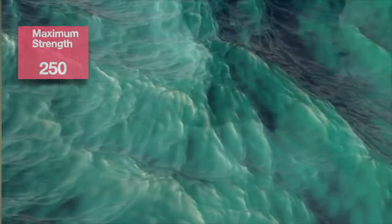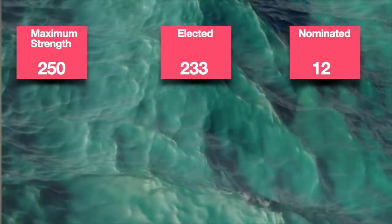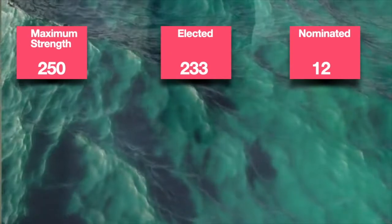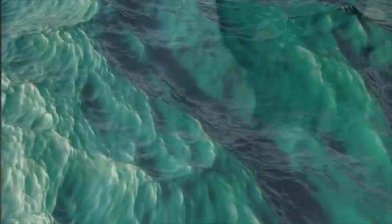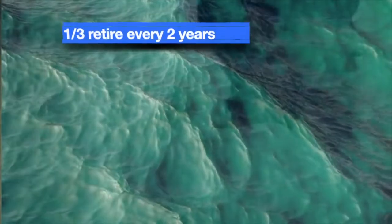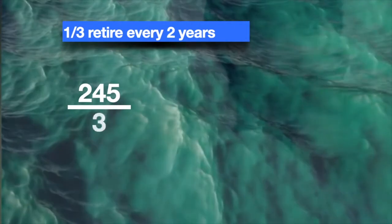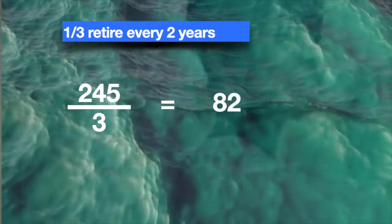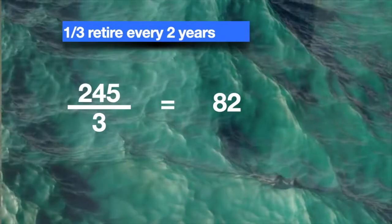Rajya Sabha: maximum strength given by the constitution is 250 — elected 233, nominated by the president 12 — total seats occupied 245. Think of Rajya Sabha as a gas station which is always open: unlike Lok Sabha, one third of the members retire every two years — that is 245 divided by 3, approximately 82 members — so elections are conducted every two years for the vacant seats.